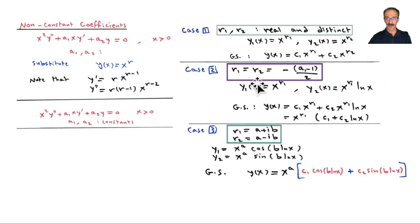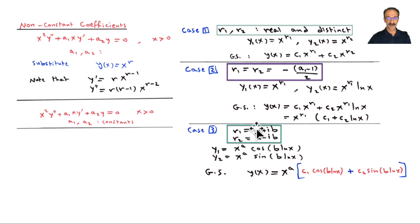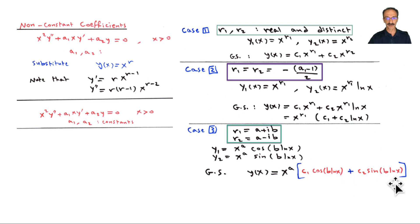For Case 2, the general solution is c₁x^r₁ + c₂·x^r₁·ln(x). For Case 3, complex roots: y₁ = x^α·cos(β·ln x) and y₂ = x^α·sin(β·ln x), giving the general solution with those two independent solutions.